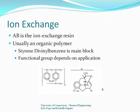An ion exchange resin is normally an organic copolymer known as styrene divinyl benzene. The image on the left is the repeating block of the polymer, and it has been sulfonated to provide a functional group, a common practice in industry. The functional group is what we're interested in, and for different applications, different functional groups are used.